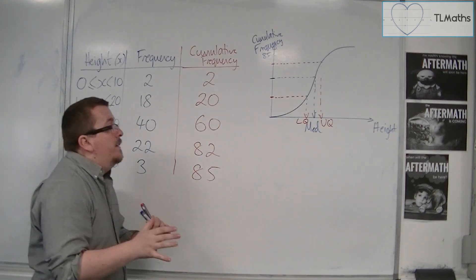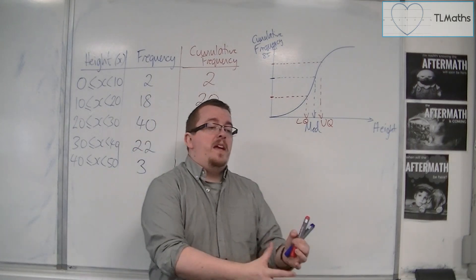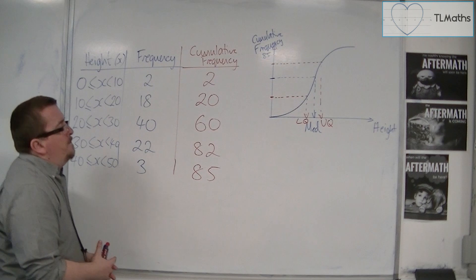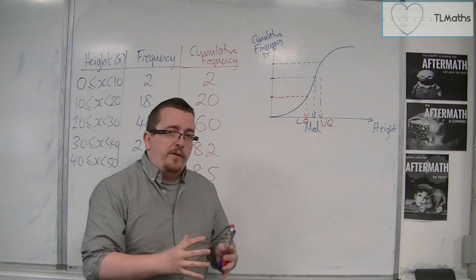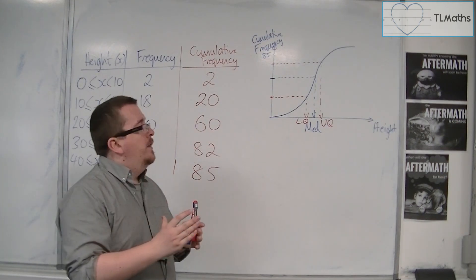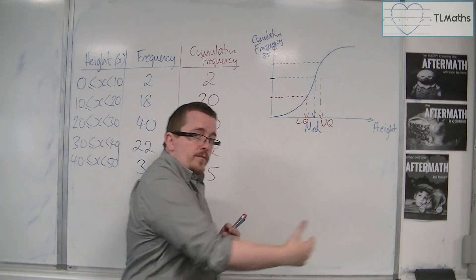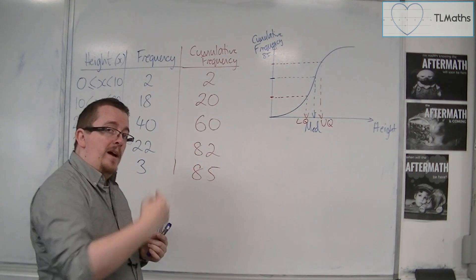And now and again, at GCSE, they might put the questions together. So, a box plot works with the lower value, the upper value, the lower quartile, upper quartile, and median.